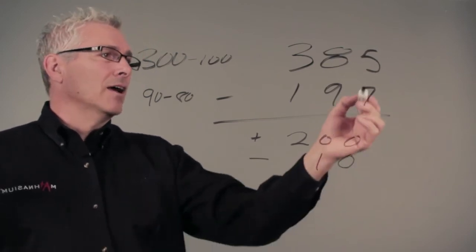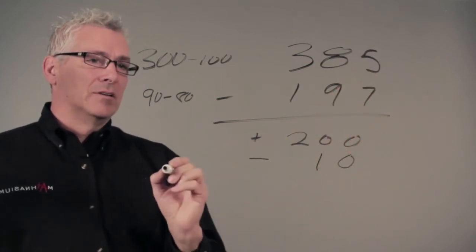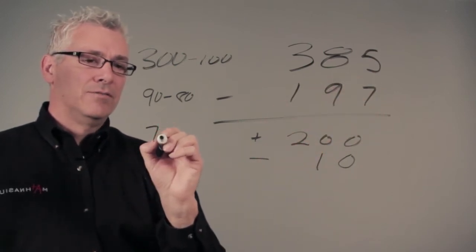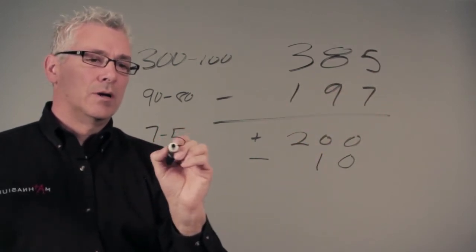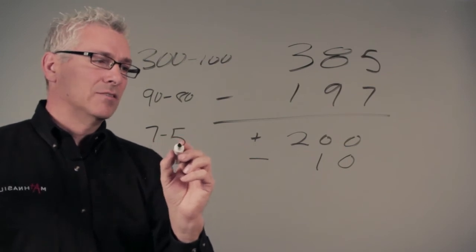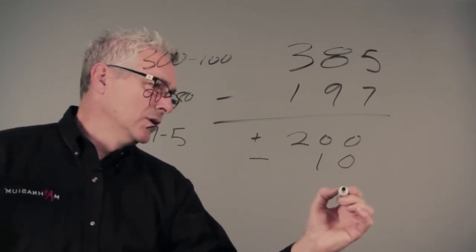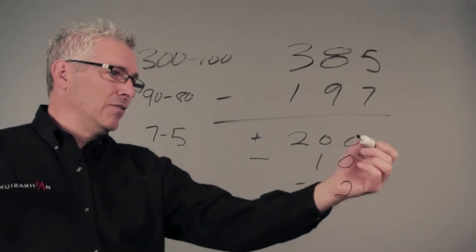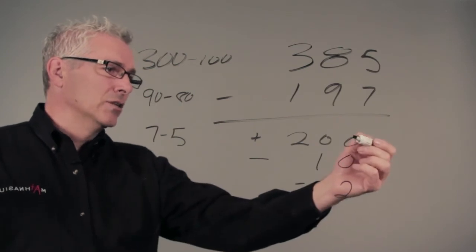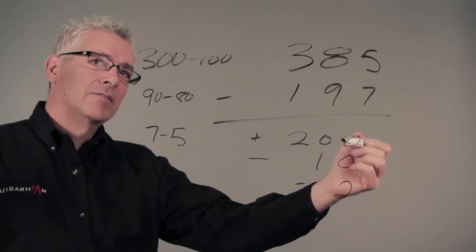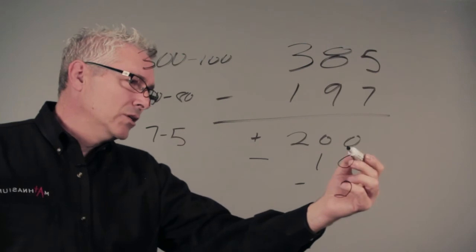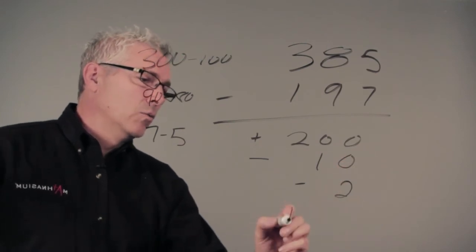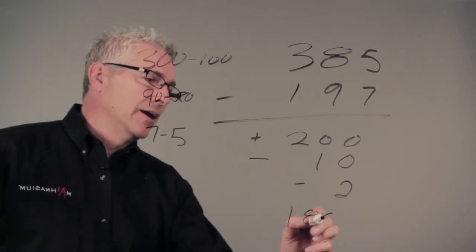And finally I've got 5 minus 7. Again, the 7 is larger so I'm going to put that first, but remembering that my bottom number is larger — 7 minus 5 is 2. I bring my 2 down here, but again it's a minus. So if I take 200 and I subtract 10, I've got 190. If I take 190 and subtract 2, I've got 188.